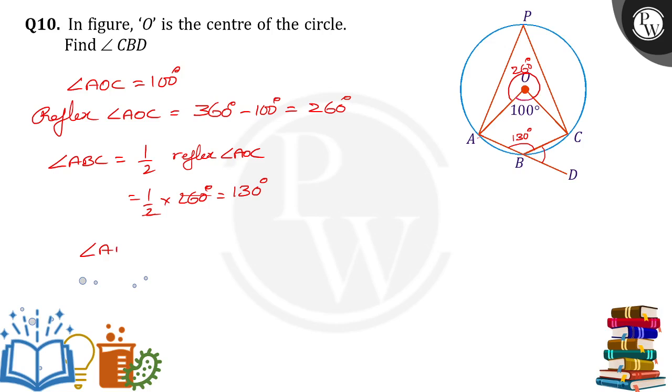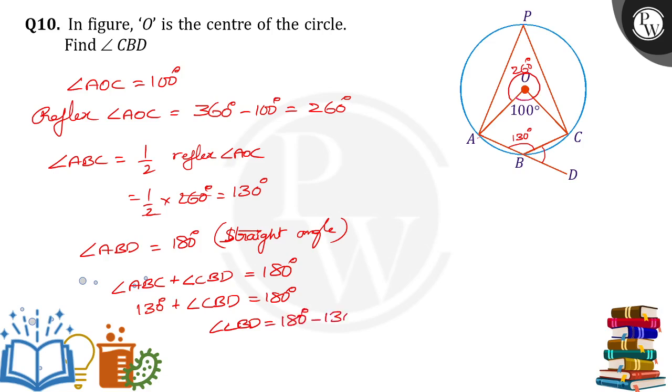Now, angle ABD is equal to how much? 180 because it is a straight angle. ABD is a straight angle. So ABD can be written as ABC plus angle CBD is equal to 180. ABC value is 130 plus CBD is equal to 180. So angle CBD is equal to 180 minus 130.